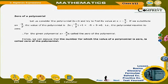Consider the polynomial 2x + 9 and try to find its value at x = −9/2. Substituting x = −9/2, the value of the polynomial is 2 × (−9/2) + 9 = −9 + 9 = 0. That is, the polynomial equates to 0. Therefore, for the given polynomial, x = −9/2 is called the zero of the polynomial. Hence, the number for which the value of a polynomial is 0 is called the zero of the polynomial.